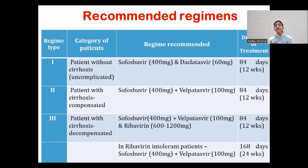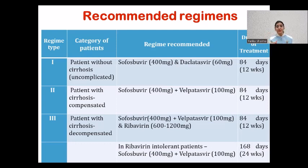In the third category, you have the most severe patients — HCV with decompensated cirrhosis. These patients may have ascites, jaundice, variceal bleeding, GI bleeding, or hepatic encephalopathy. The regimen is SVR: Sofosbuvir 400 mg plus Velpatasvir 100 mg plus Ribavirin. The dose of Ribavirin varies between 600 mg and 1200 mg depending on the weight of the patient. This is also taken for 3 months, after which the first testing is done.